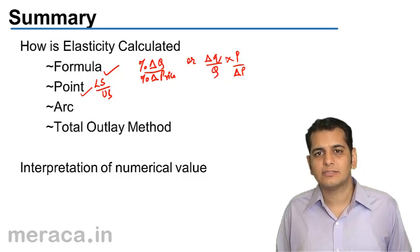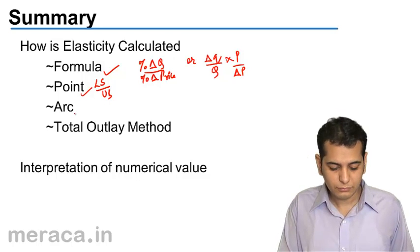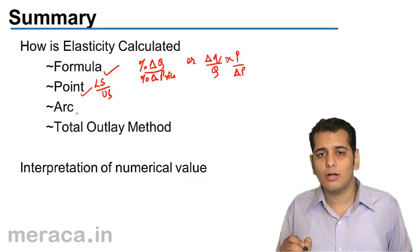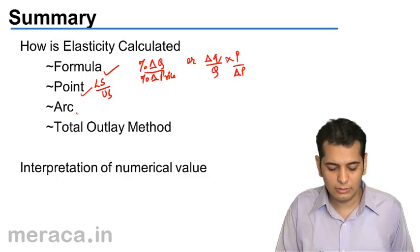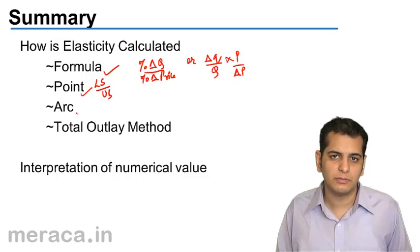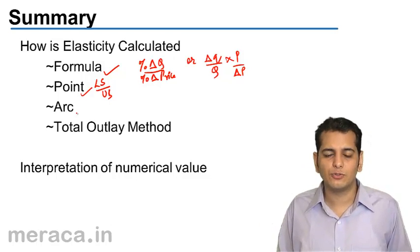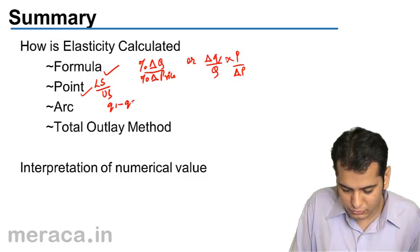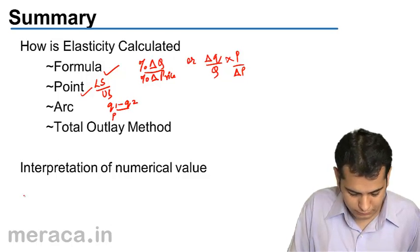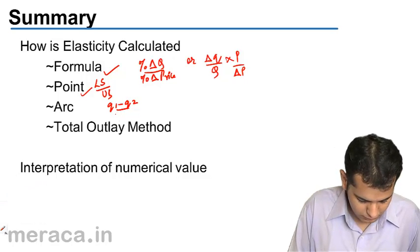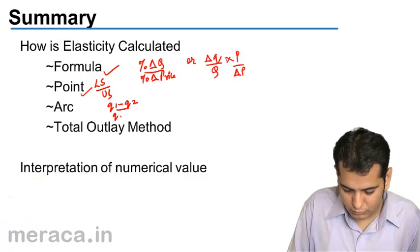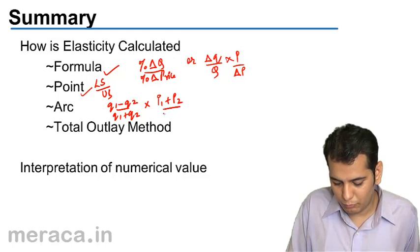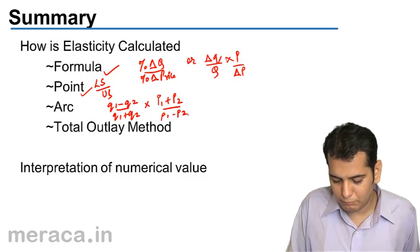To find the elasticity, what we do is we take any two points on the curve, we join the points to form a chord, and with the help of a chord, a curve is formed or an arc is formed. And then we take the quantities and the prices at those two relative points and put them in this formula: q1 minus q2 upon q1 plus q2 times p1 plus p2 upon p1 minus p2.